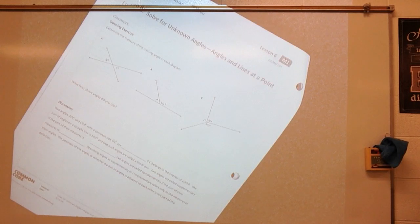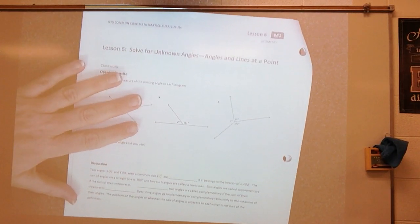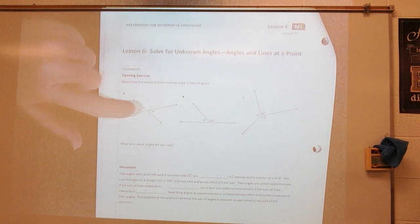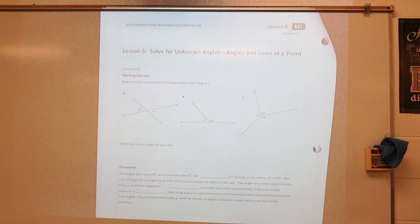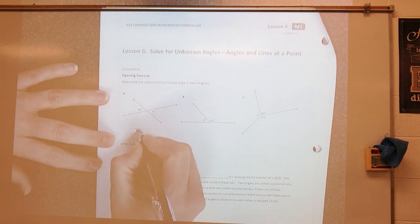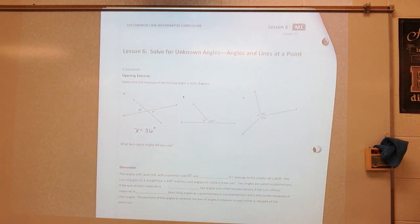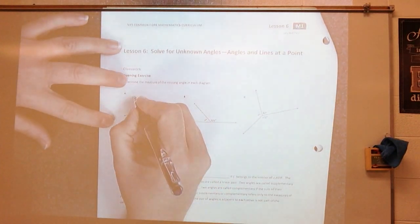It says determine the measure of the missing angle in each diagram. Looking at this, I'm looking for this angle right here. Hopefully you know that x would be equal to 36 degrees. I know that because vertical angles are equal. So these are vertical angles.